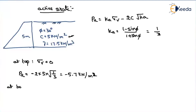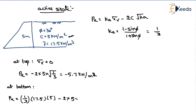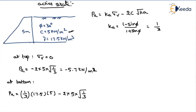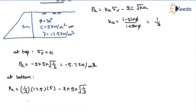At the bottom of the retaining wall, the active earth pressure equals Ka times gamma times H minus 2C times root Ka. There is no water table, so the vertical stress is gamma times height: 1/3 times 17.5 times 5 minus 2 times 5 times root(1/3), giving approximately 23.5 kilonewton per meter square.